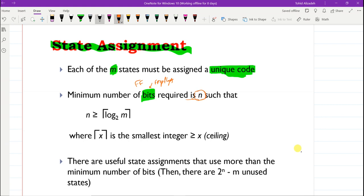That is determined this way: n will be equal to or bigger than the ceiling of log₂(m). This is the ceiling function, and it is the smallest integer bigger than or equal to log₂(m).